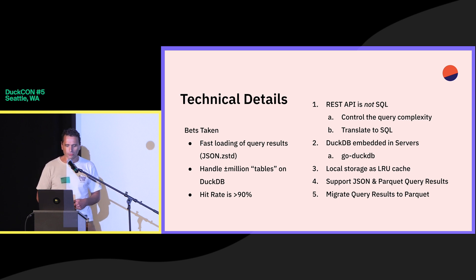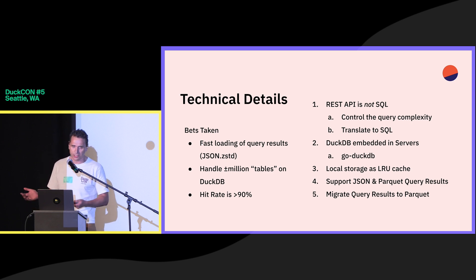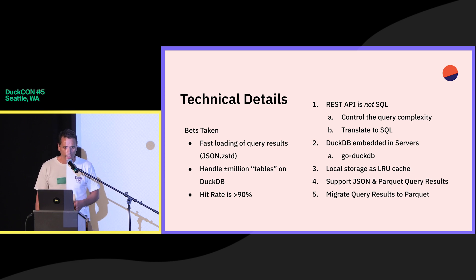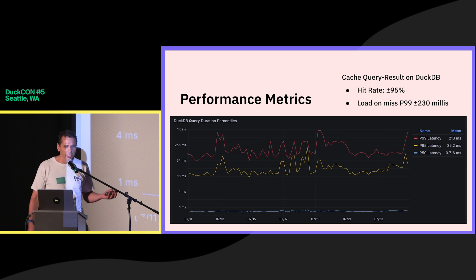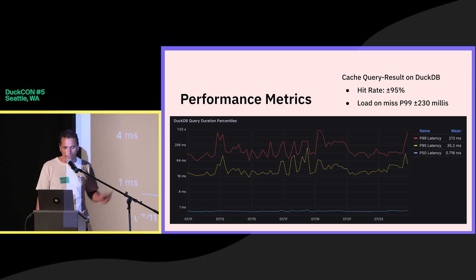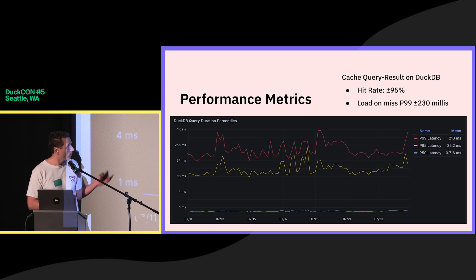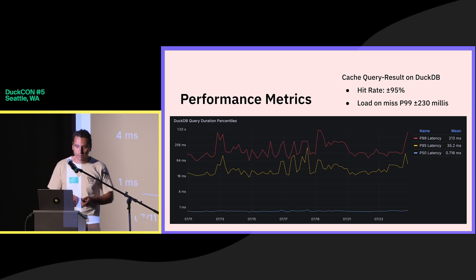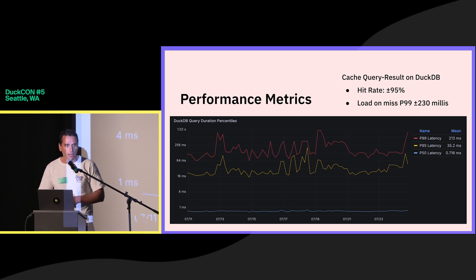We implemented an LRU cache for the results, we support JSON, and then we migrated the query results to Parquet, which is the decent thing to do. It's been running in production for quite a few months now. We have queries running in less than a millisecond — this is really nice for API use cases, mobile apps, and things like that. All bets kind of played out: hit rate is high, and we can load the query result even if it's an 8-gigabyte Parquet file in a decent amount of time.